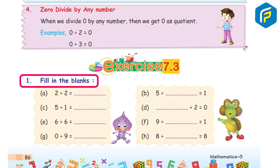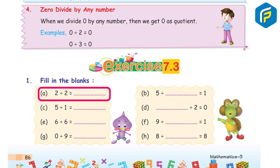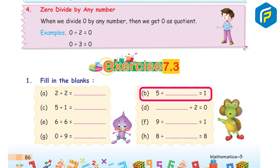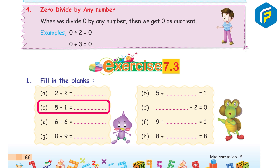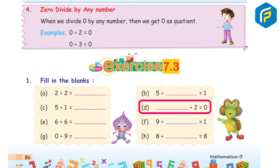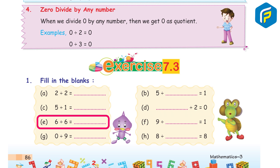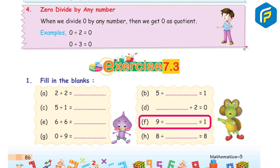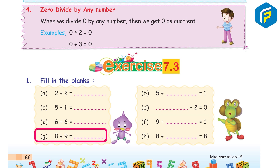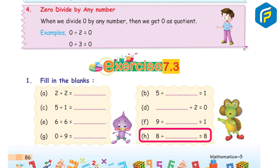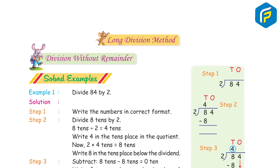Exercise 7.3, Question 1: Fill in the blanks. a) 2 ÷ 2 = 1. b) 5 ÷ 5 = 1. c) 5 ÷ 1 = 5. d) 0 ÷ 2 = 0. e) 6 ÷ 6 = 1. f) 9 ÷ 9 = 1. g) 0 ÷ 9 = 0. h) 8 ÷ 8 = 1.